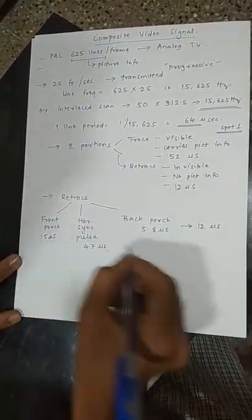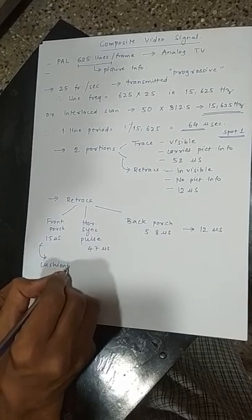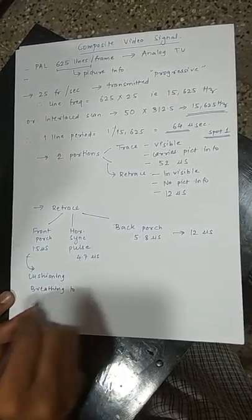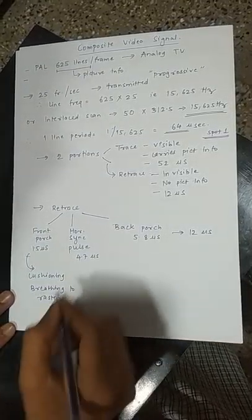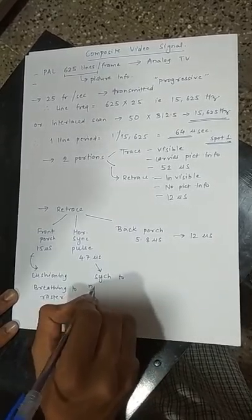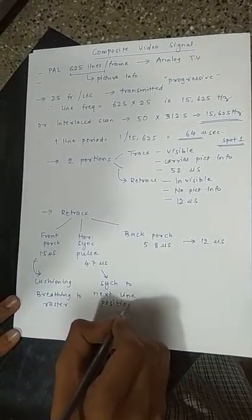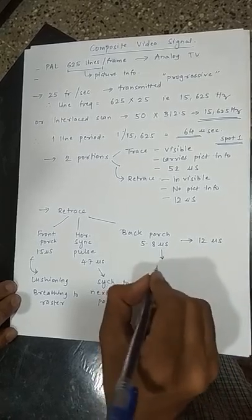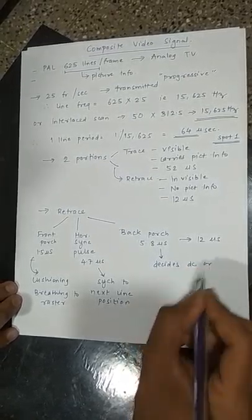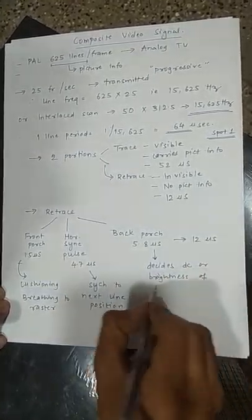Now, what is the functioning of these three portions? Front porch gives cushioning or breathing space to the raster. Horizontal pulses provide sync to next line position. And back porch decides DC or brightness level of next line.